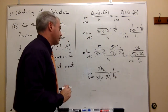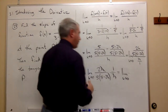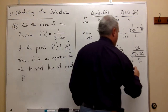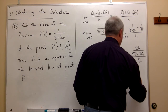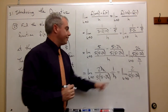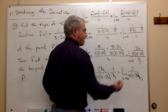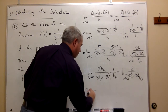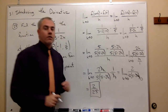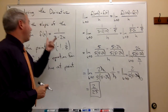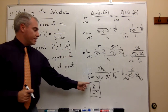I'm left with the limit as h goes to 0 of 2 on top, and 5 times 5 minus 2h on the bottom. If h goes to 0, the negative 2h becomes 0, and I get 2 over 5 times 5, which is 2 over 25. So the slope of this function at the point negative 1, one fifth, is 2 over 25.